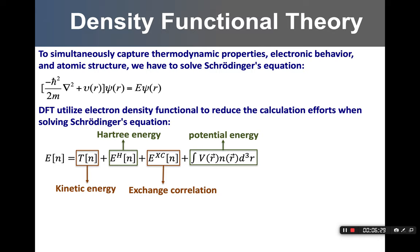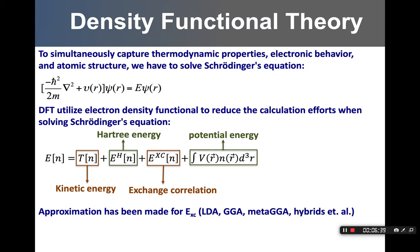One thing to keep in mind: you're going to always see terminologies such as LDA, GGA, meta-GGA, or hybrid functionals. Those are basically different ways to estimate the exchange-correlation functional, which is the third part of the energy decomposition. This term is actually the most difficult part to estimate. The development of the DFT field is always driven by new methods or models that can capture a more accurate value of this term.